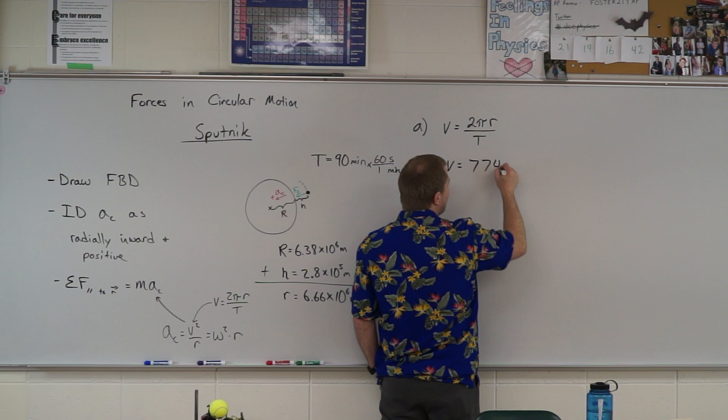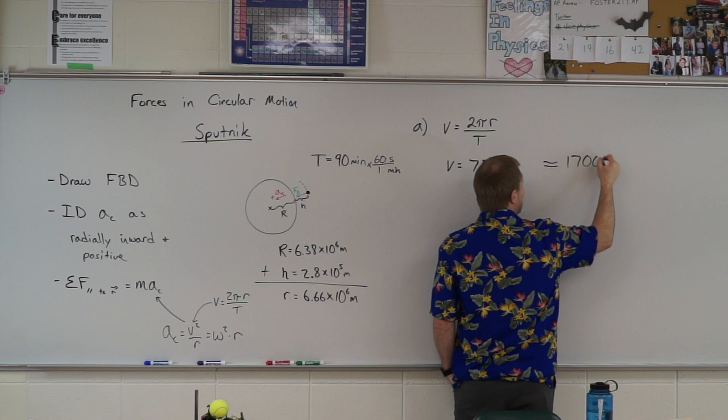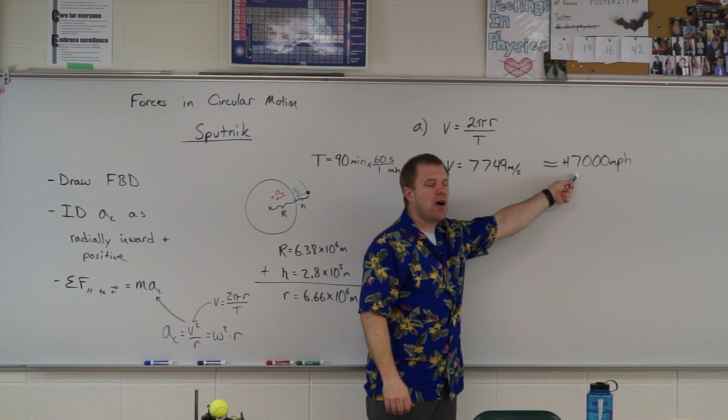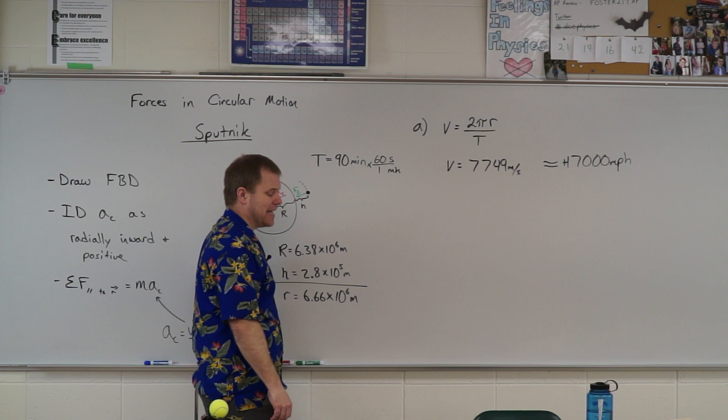That's more than 17,000 miles per hour. That's fast. So why is it so difficult to get a satellite to orbit? Because you need that much speed in order to get it to orbit. So you do need a lot of rocket power to get that to happen.